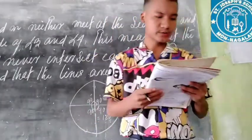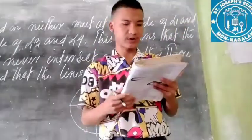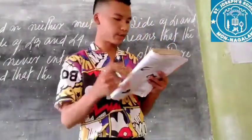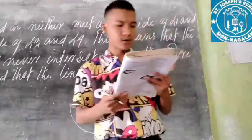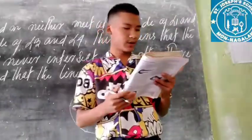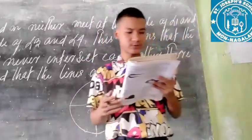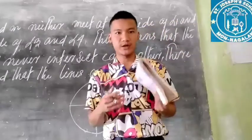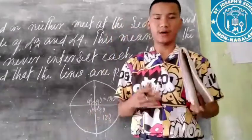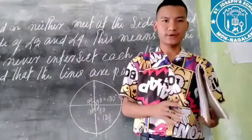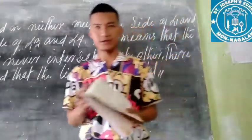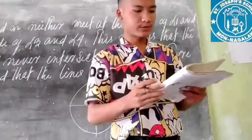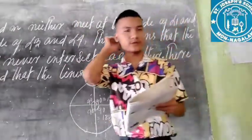Look at various objects around you. You will notice that some of them move from one place to another, while in others some part of the object moves. What is movement? I am moving from left side to right side — this is a body movement. So there are different kinds of movements.